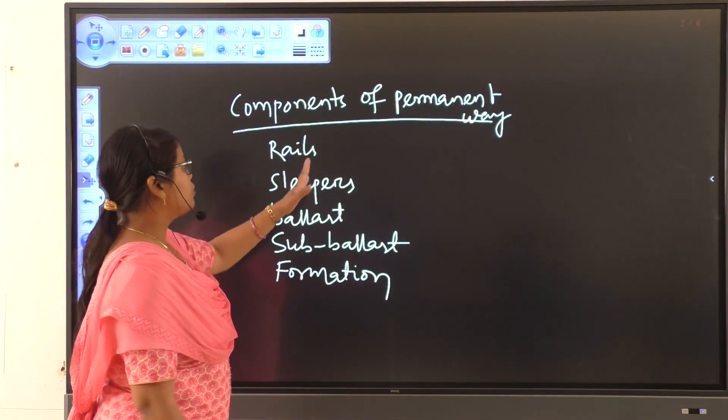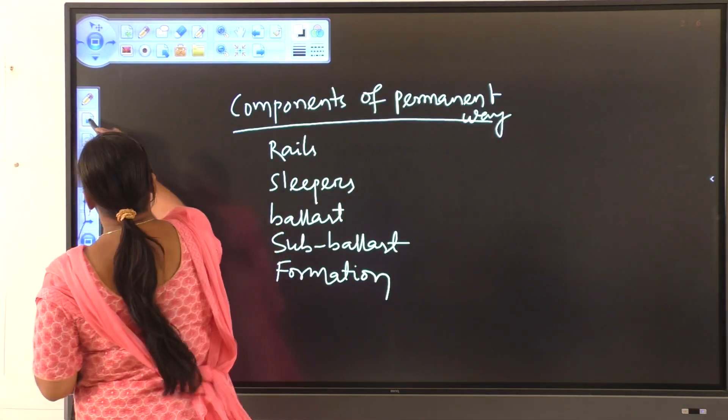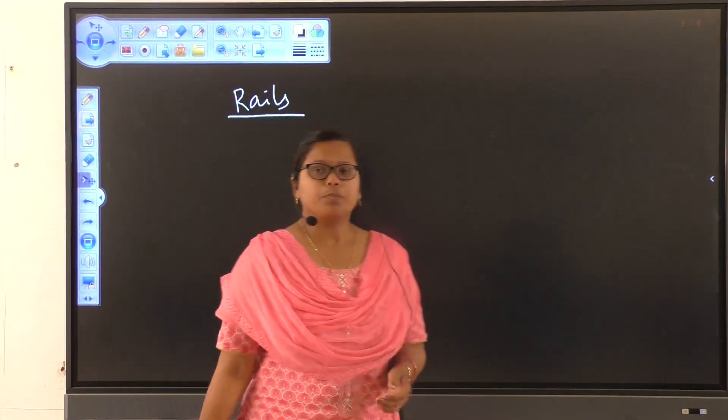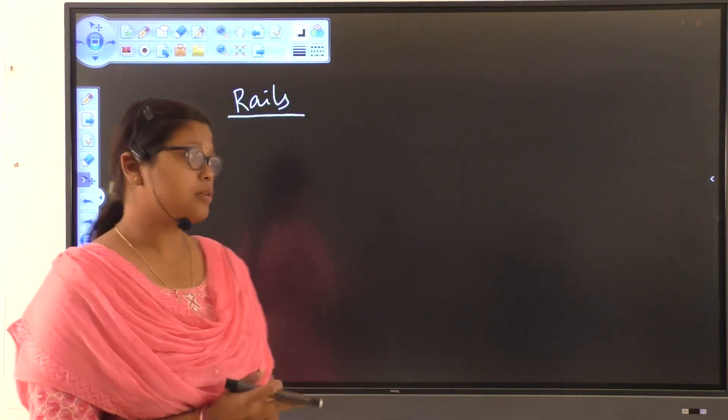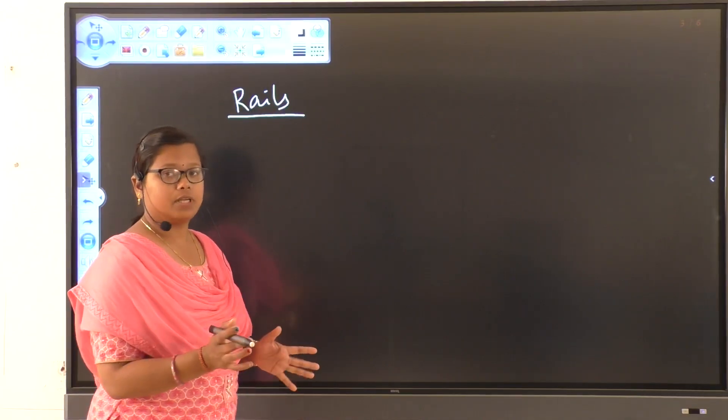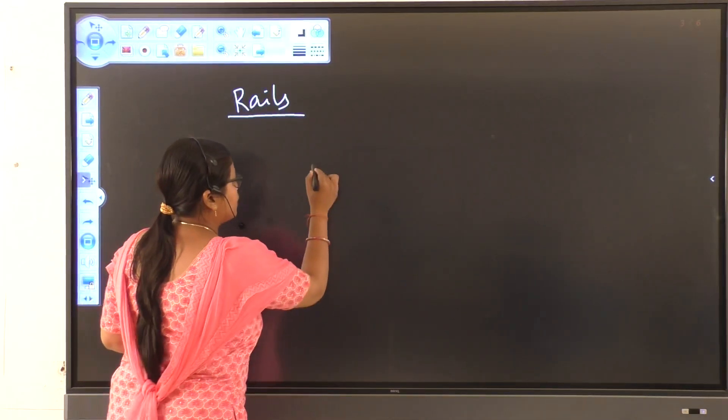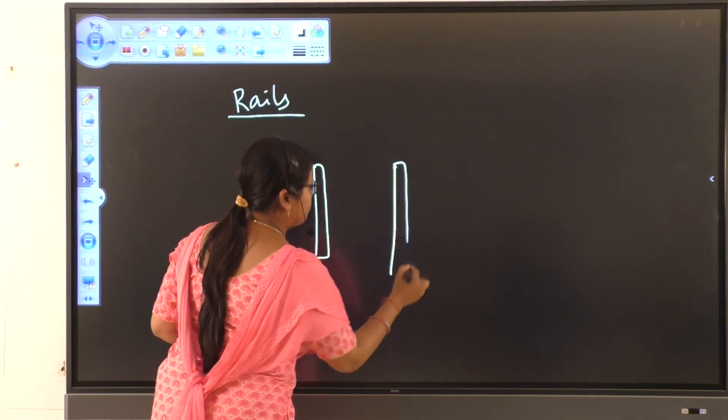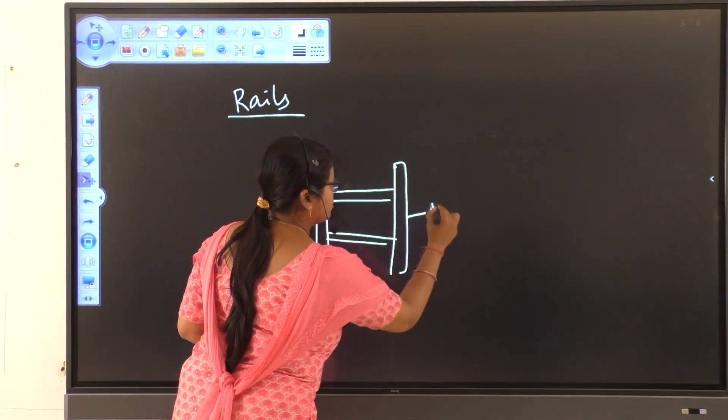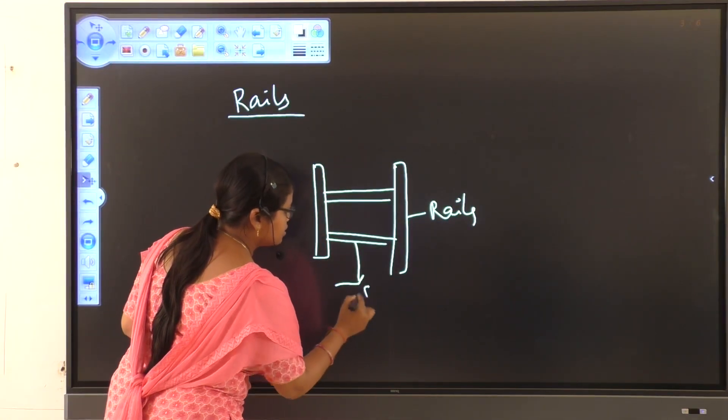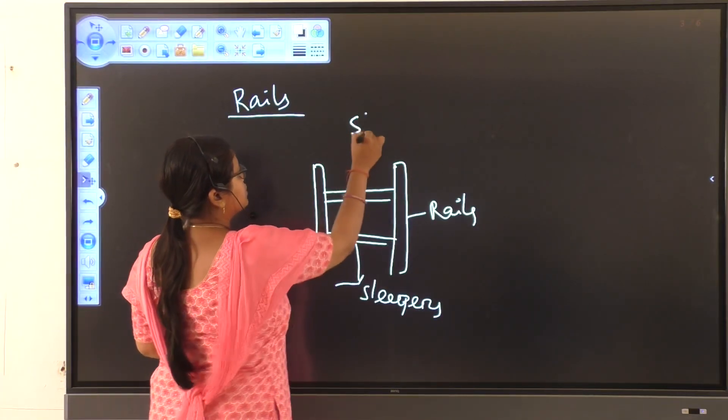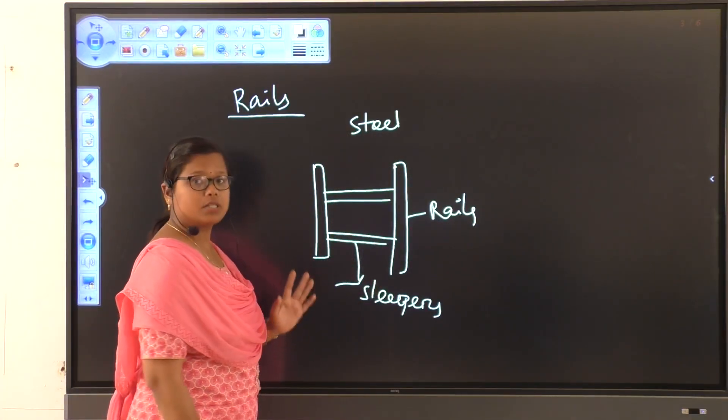First, we should know that what is rails? Sometimes, some students call that rails and trains are same. But not, rails and trains are different. So what is rails? Rails are made up of steels. And it holds the sleepers in position. These are the rails. And these are the sleepers. Rails are made up of steel. It holds the sleepers in position.